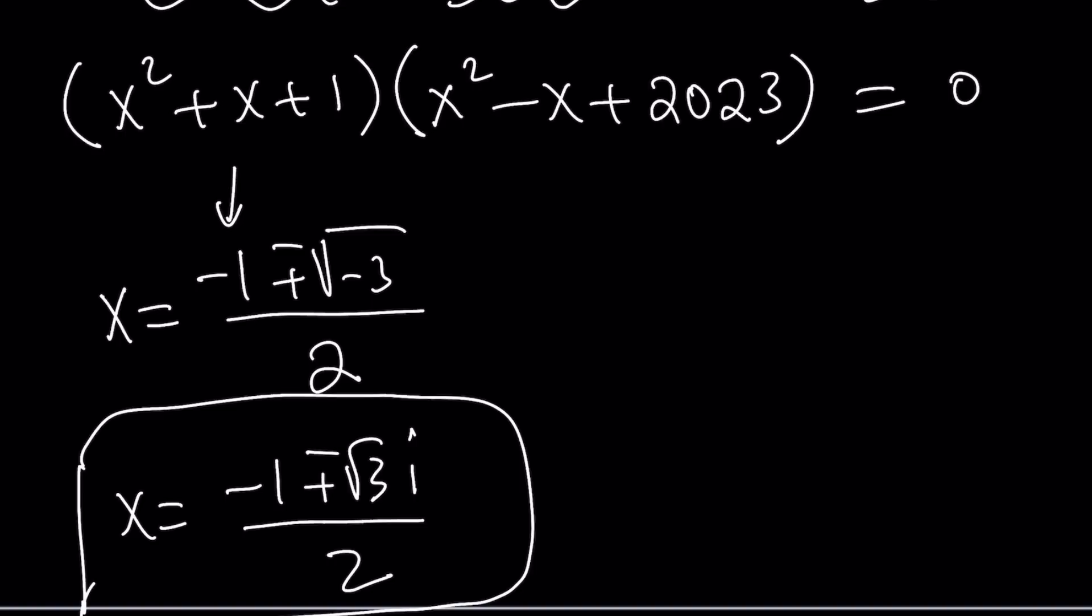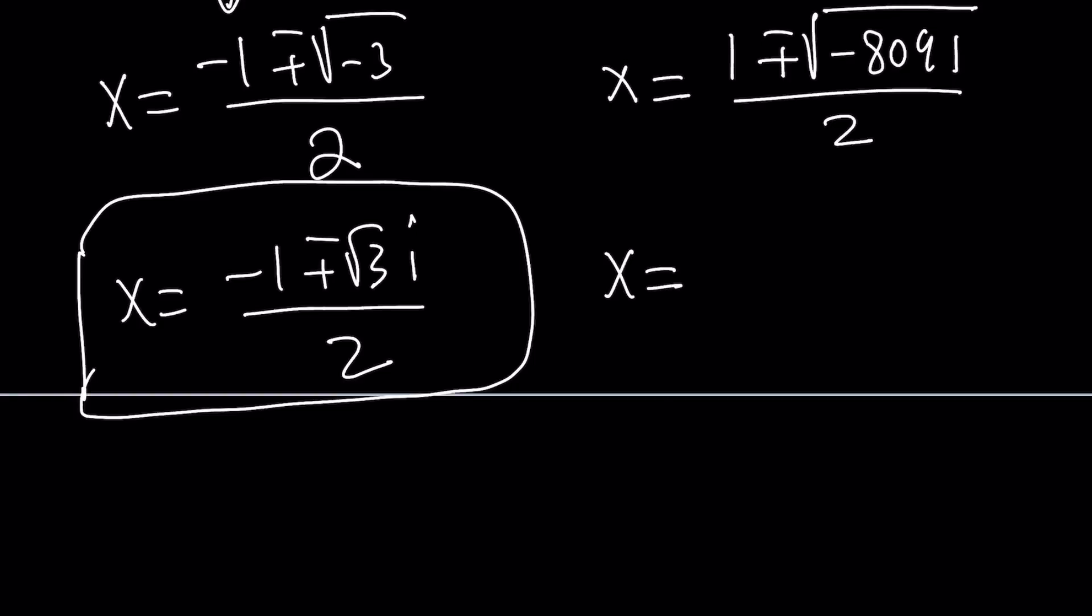Now let's take a look at the other one. Maybe this is going to give us real numbers. No way, right? x equals negative b, this time 1, plus minus the square root of b squared, which is 1, minus 4 times 2023, which is 8092. Their difference is going to be negative 8091. Such a nice number, right? We can write this as x equals, hmm, how do you factor 8091? Let's take out the negative first. Use i. 1 plus minus the square root of 8091 i over 2. By the way, i is a number whose square equals negative 1.